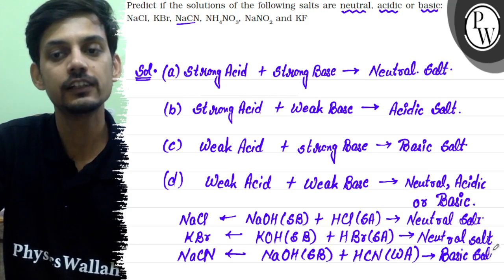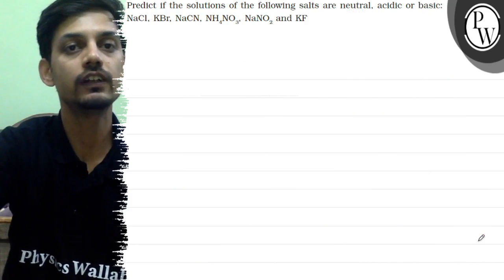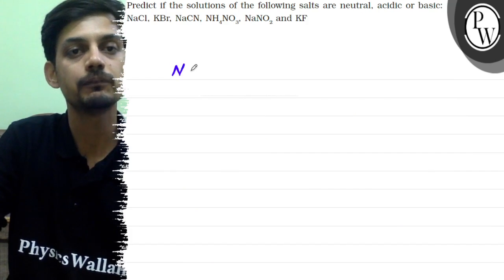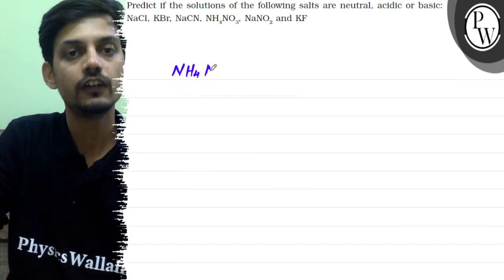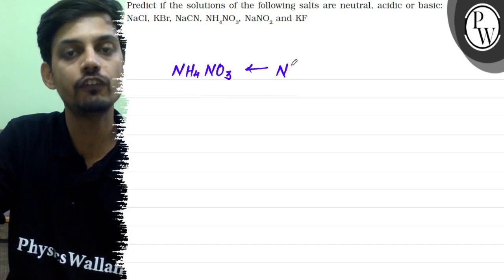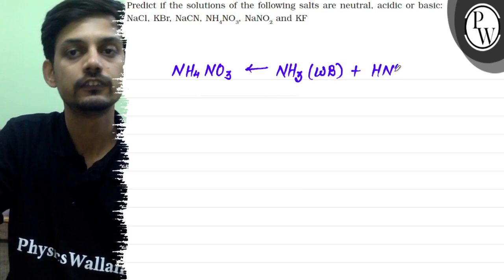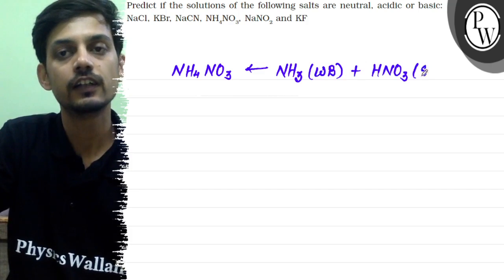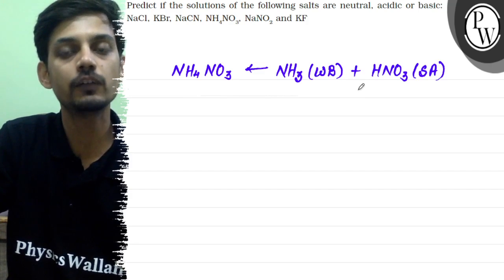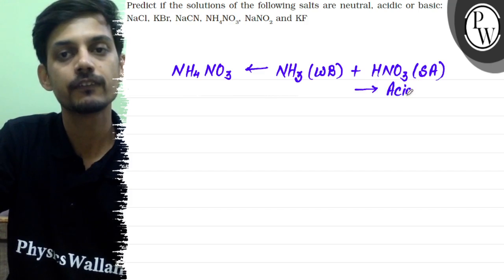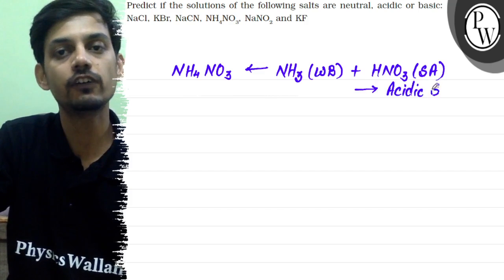The next salt is NH₄NO₃. This is formed by the neutralization of NH₄OH (ammonia), which is a weak base, and HNO₃, which is a strong acid. This belongs to the strong acid–weak base category, so this will be an acidic salt, because residual acidic nature is left.